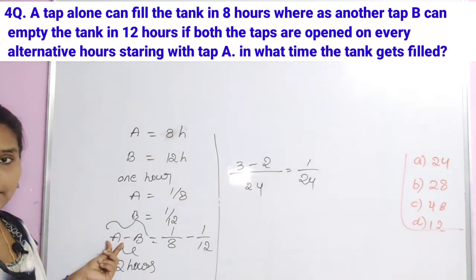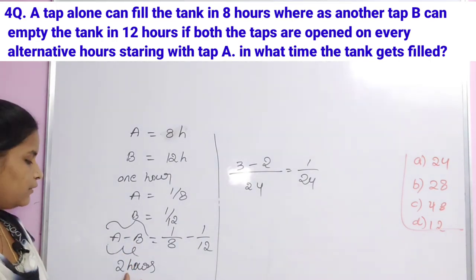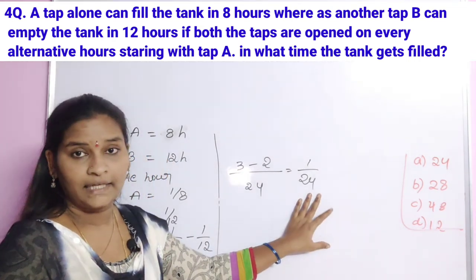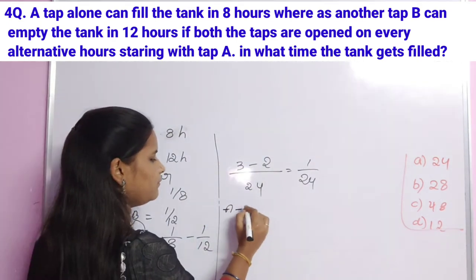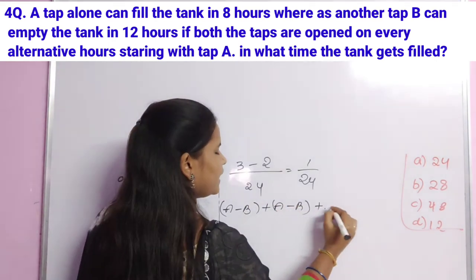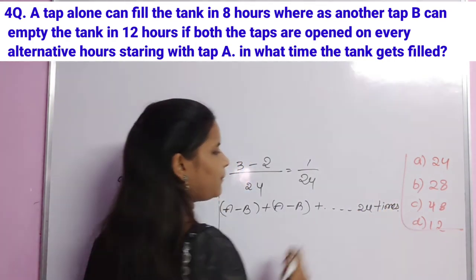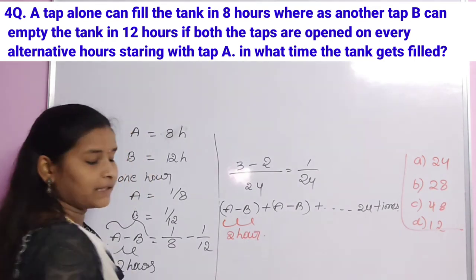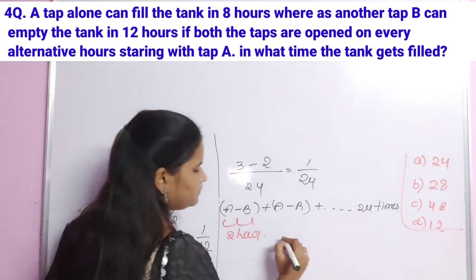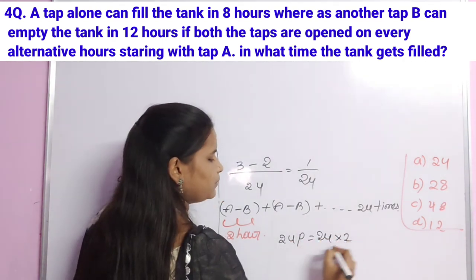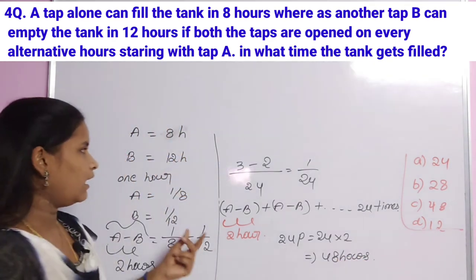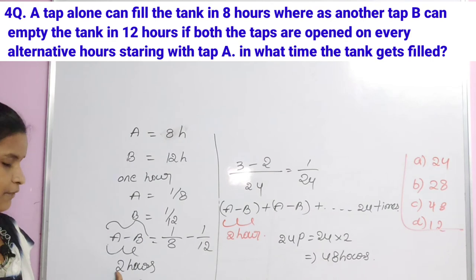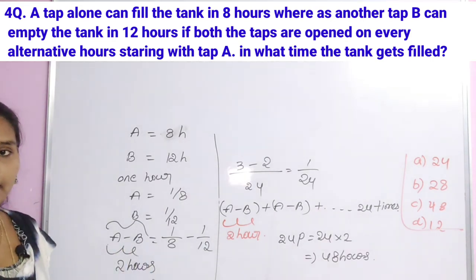So every 2-hour cycle, 1/24th of the tank is filled. To fill the whole tank: 24 cycles × 2 hours = 48 hours. Total time to fill the tank is 48 hours. Option C is the correct answer.